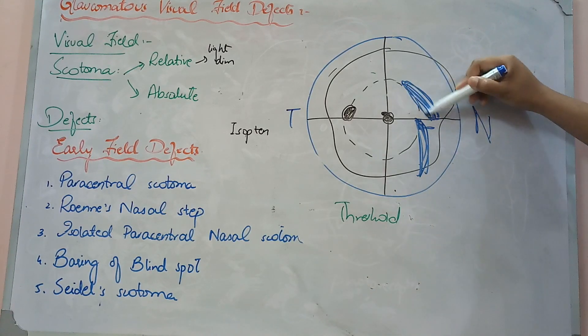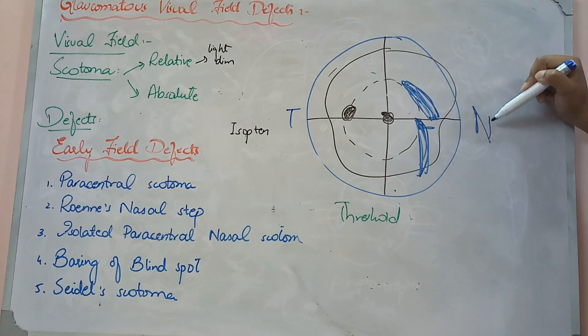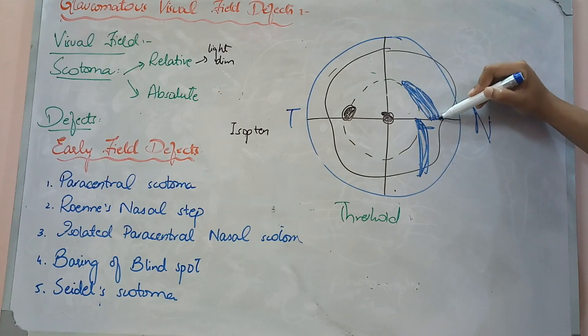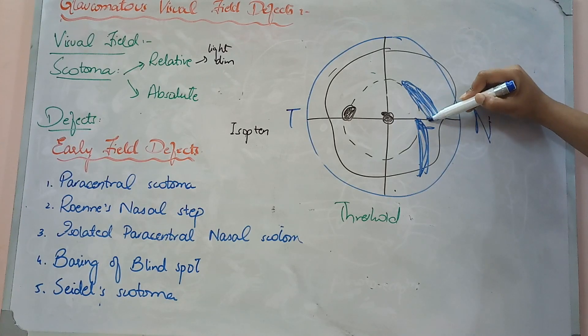The defect is the same — it is on the nasal side — but the other portion respects the horizontal raphé.